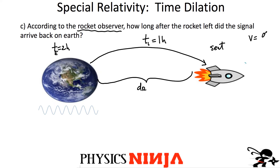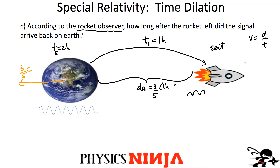Using speed = distance / time: according to the rocket, the Earth is moving to the left at three-fifths c. So the distance when the signal was sent — the initial distance as measured by the rocket — is simply (3/5)c × 1 hour = (3/5)c · hour.